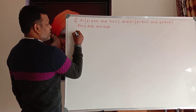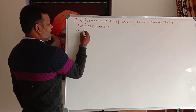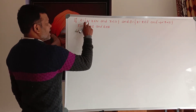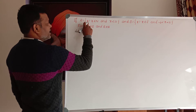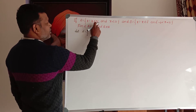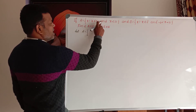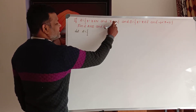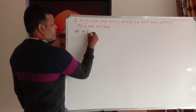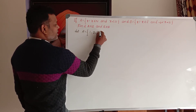First, Set A: x belongs to natural numbers and x is less than 4. Natural numbers less than 4 are 1, 2, 3.